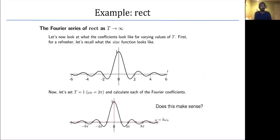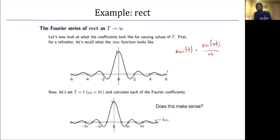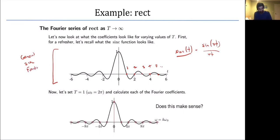As a refresher, the normalized sinc function sinc(t) has a peak at zero and zero crossings at every integer value — it's like the Broadcom logo. This is a property of the normalized sinc function: if I just have sinc(t), it will have zero crossings at every integer sampling of time. This plot is just here as a general sinc function refresher.